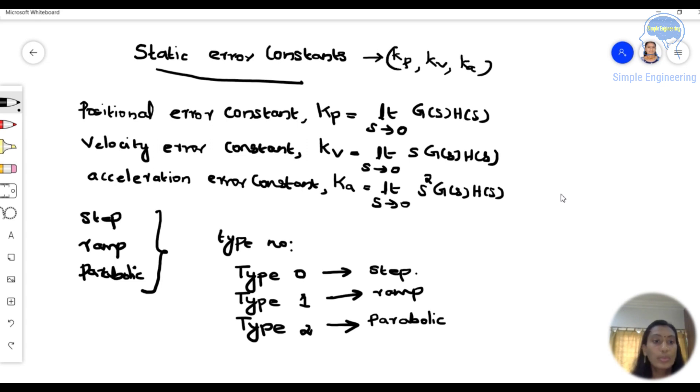So Kp is positional error constant which is denoted as Kp is equal to limit S tends to zero, G of S, H of S.